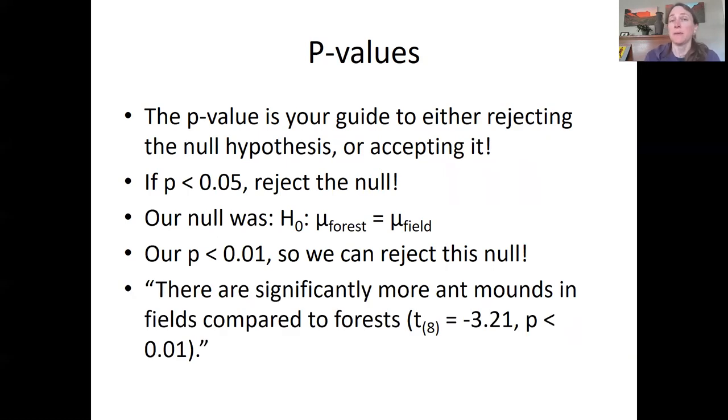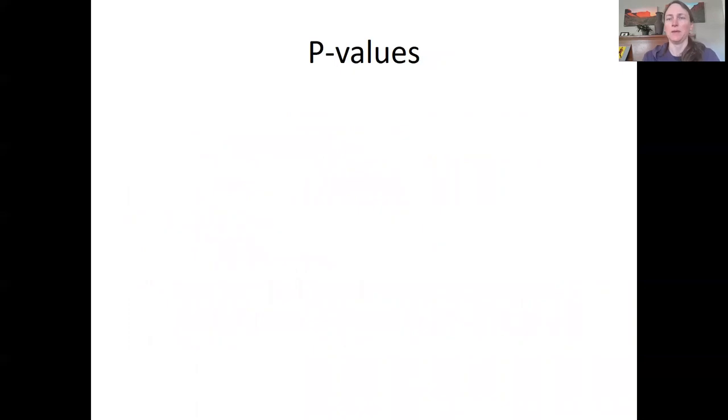And we could say by looking at the data and noticing that there are more ant mounds on average in the field, we could say there are significantly more ant mounds in fields compared to forests. And then we would put our statistics in parentheses as evidence to support that claim. That's where statistics belong. They don't belong as nouns in your sentences. So you would say this statement, there are significantly more ant mounds in fields compared to forests, and the evidence in parentheses as a t with eight degrees of freedom is negative 3.21 and a p less than 0.01. So p values are part of the evidence from the statistical test.